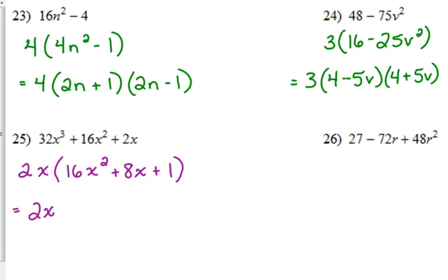What we're left with is a perfect square trinomial. 16x squared plus 8x plus 1 is 4x plus 1 squared.